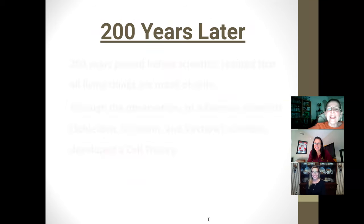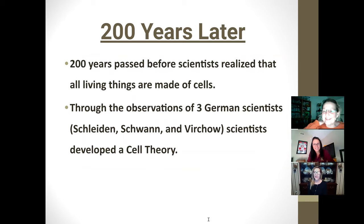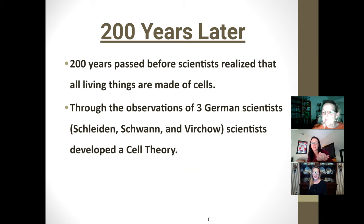About 200 years later, no one had invented another microscope or made new discoveries. Then three German scientists came along who were competing and discovering more. After 200 years, they realized that all living things are made of cells. These three German scientists developed what's known as the cell theory.